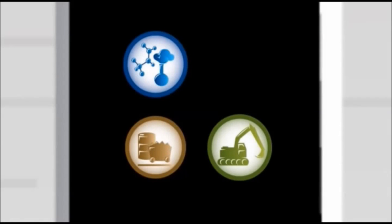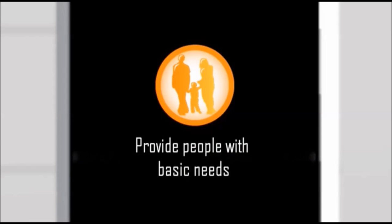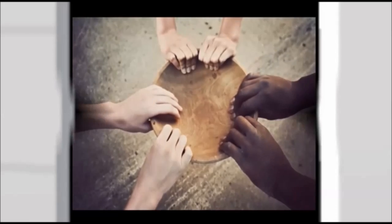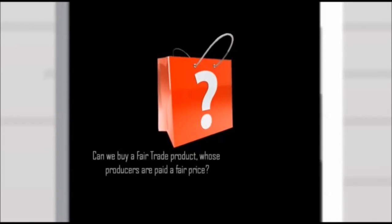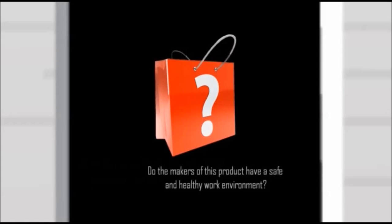Those first three sustainability conditions involve using the planet's resources more wisely. If they are met, the planet can keep providing us with the natural resources and protection we need to survive and to thrive. The last sustainability condition involves our social responsibility to create a society where everyone can meet their basic needs. Following this, we might ask: can we buy a fair trade product whose producers are paid a fair price? And do the makers of this product have a safe and healthy work environment?